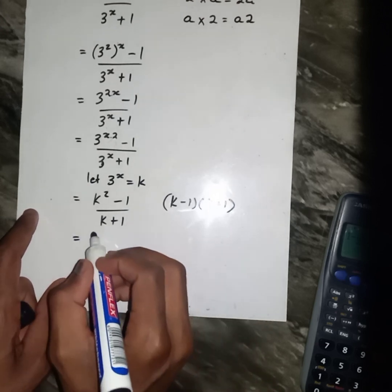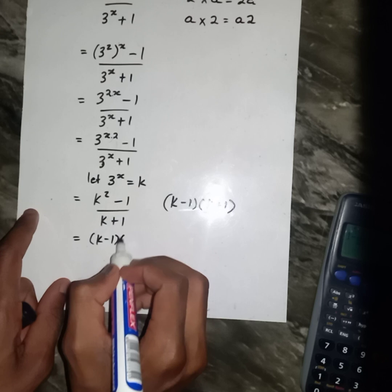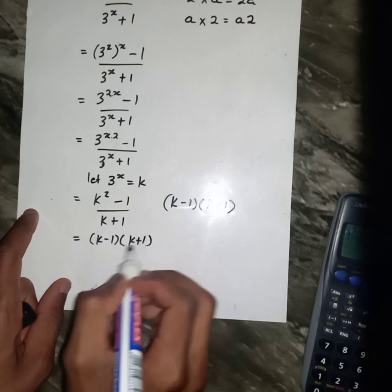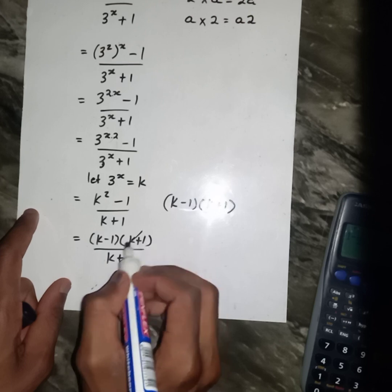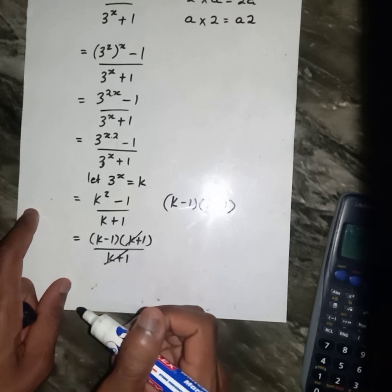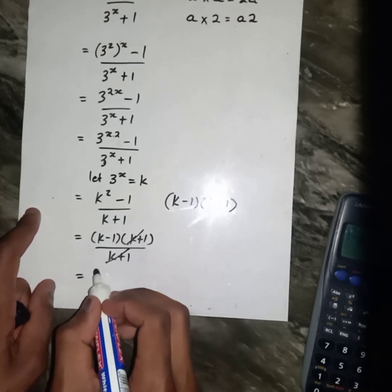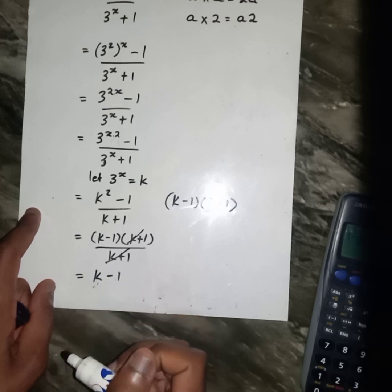I'm going to write it somewhere here. Minus 1, k plus 1. Then my denominator is k plus 1. This cancel this. Then I'm going to remain with k minus 1.